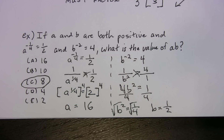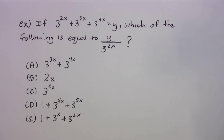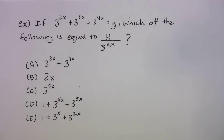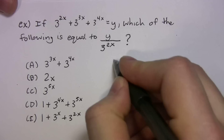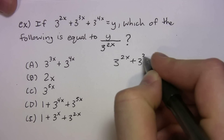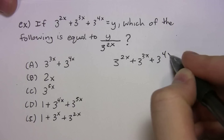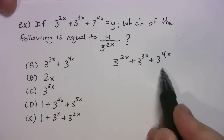If you need to review that explanation, bring the video back and go over it again. Let's do another example. It says: if three to the two x plus three to the three x plus three to the four x equals y, which of the following is equal to y over three to the two x? I'm going to show you how to do this by factoring. Factor out the biggest thing in common between these terms, which is three to the two x.